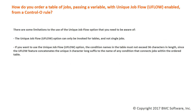There are some limitations to the use of the unique job flow option that you need to be aware of. A uFlow option can only be invoked for tables and not single jobs. If you want to use the uFlow option, the condition names in the table must not exceed 36 characters in length, since the uFlow feature concatenates a unique three-character suffix to the name of any condition that connects jobs within the ordered table.